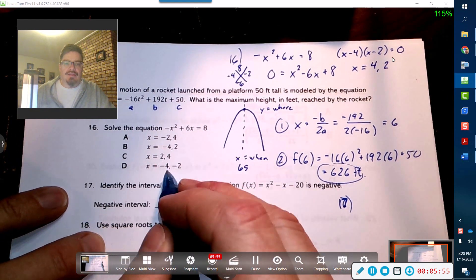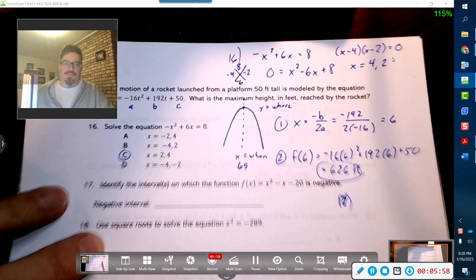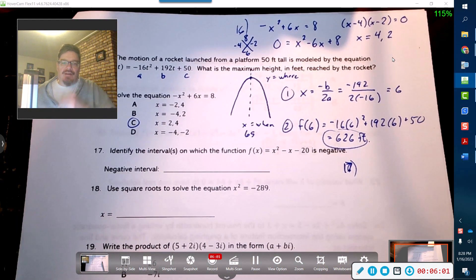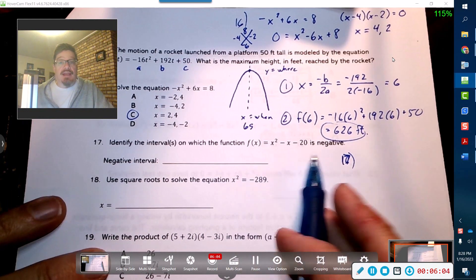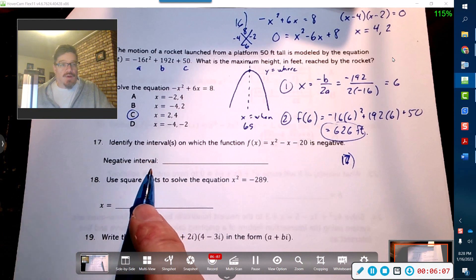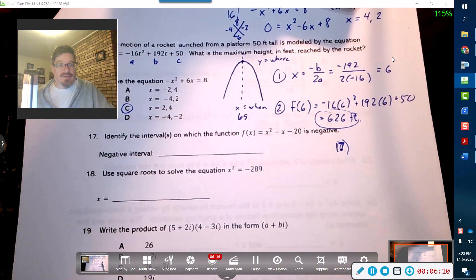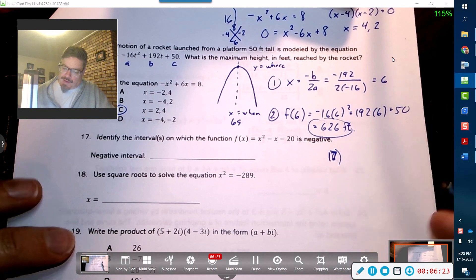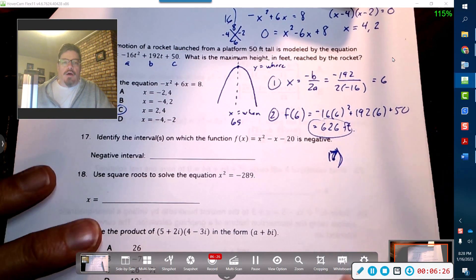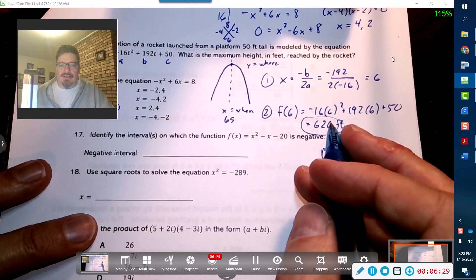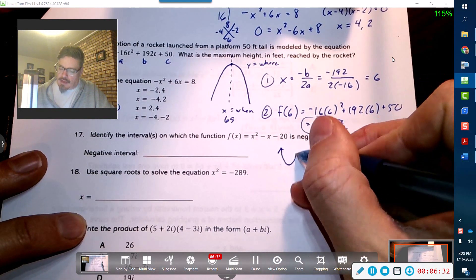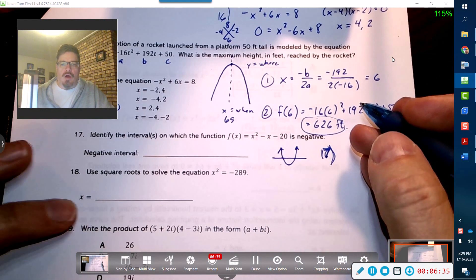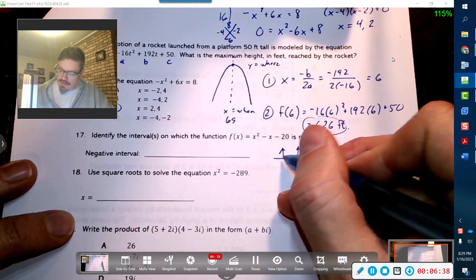Number 17, identify the interval in which the function is negative. Now we can do this two different ways here. We can do it by hand to figure out where it's actually below the x-axis, or we can use our graph and calculate it. What I'm going to do is I'm going to do this by hand. So this guy, where he is negative. This means that this guy is pointing upwards, and because he's pointing upwards, that means that he's going to be negative.